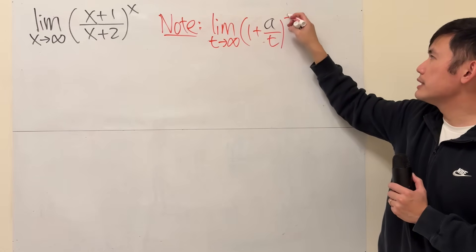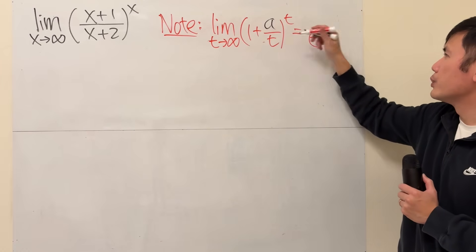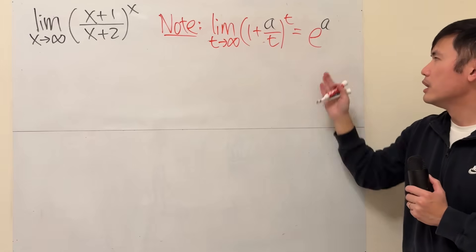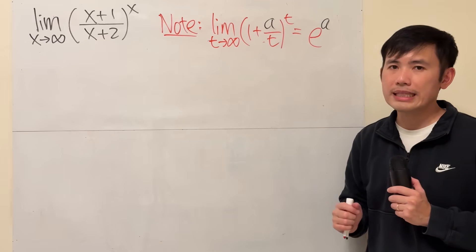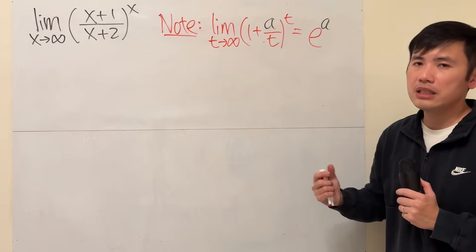Raised to the t's power like this, we will end up with e to the a's power. And the e is the special number e, which is approximately 2.718. You see that a lot in calculus.